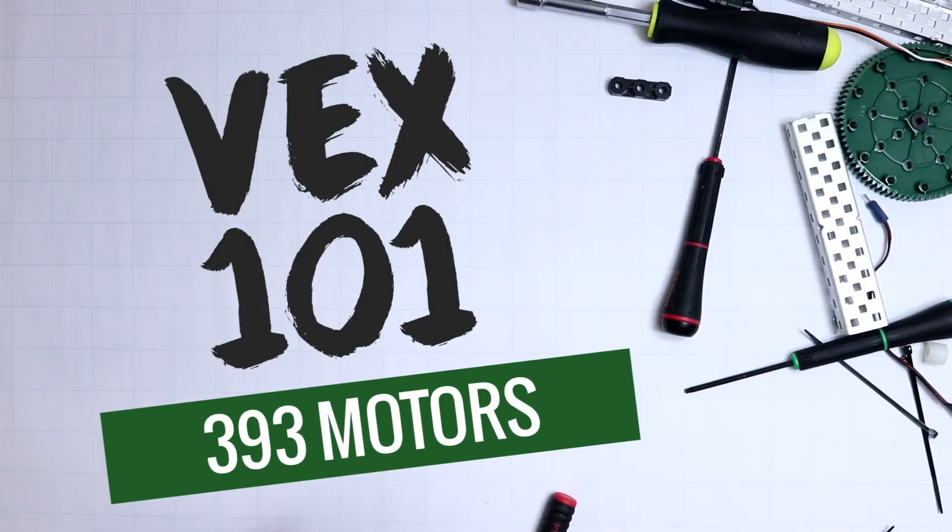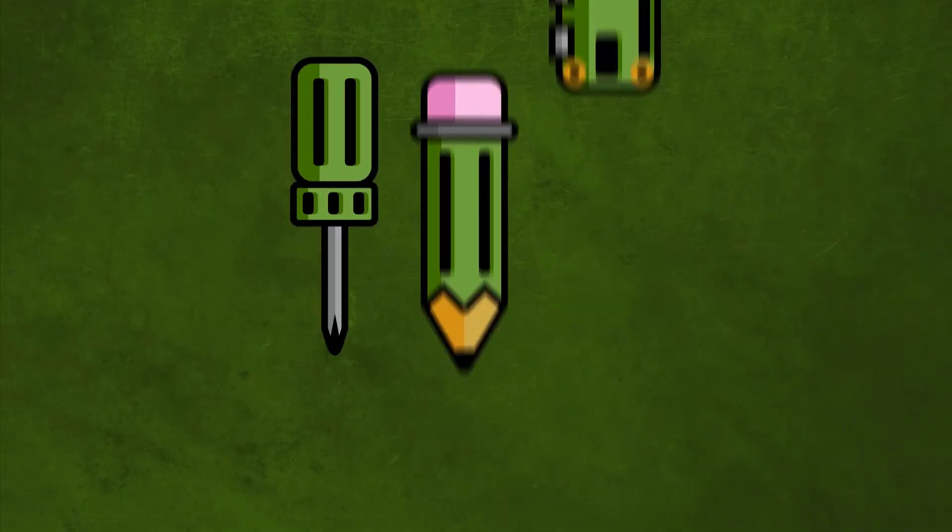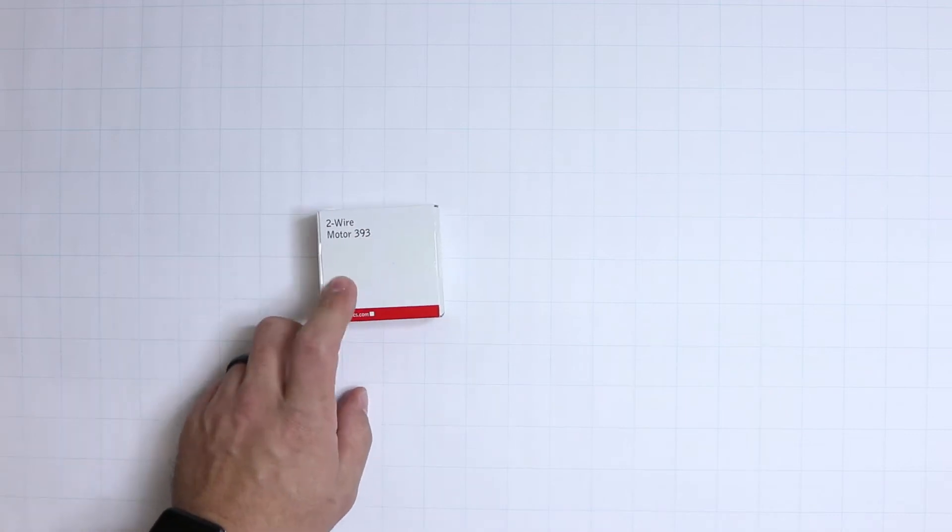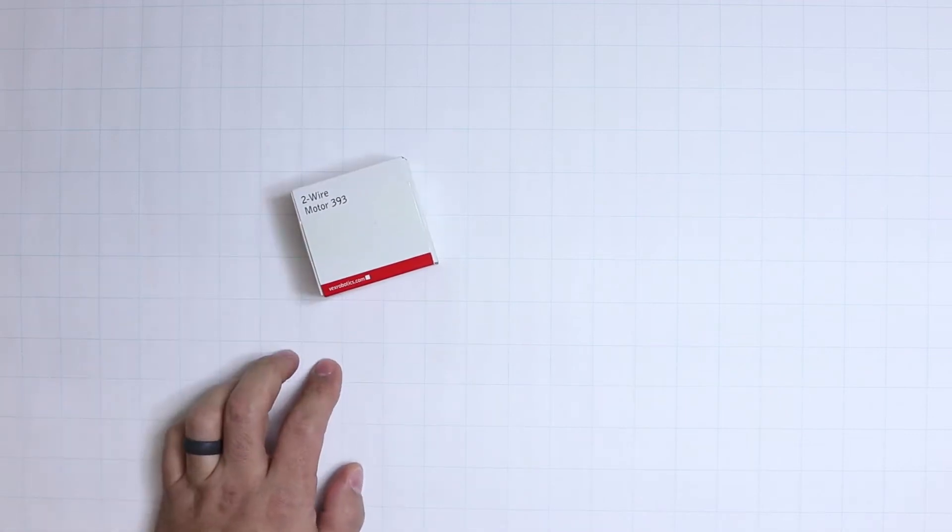Welcome to VEX 101. Today we're talking about motors and looking at the 393 two-wire motor and what we can do with that.